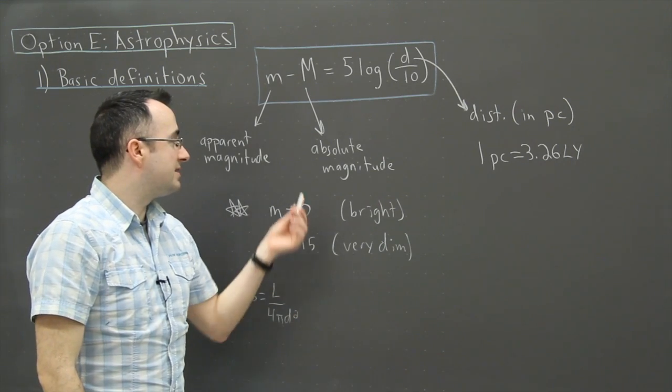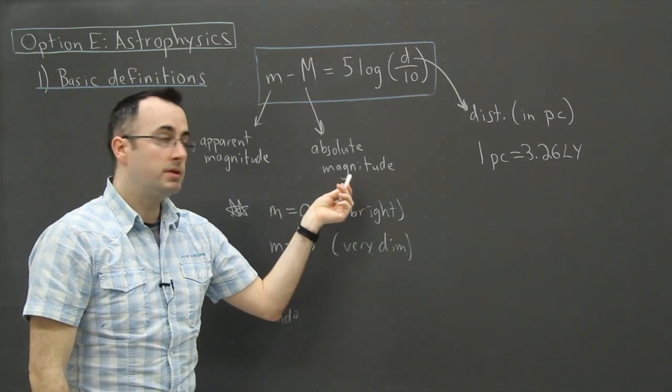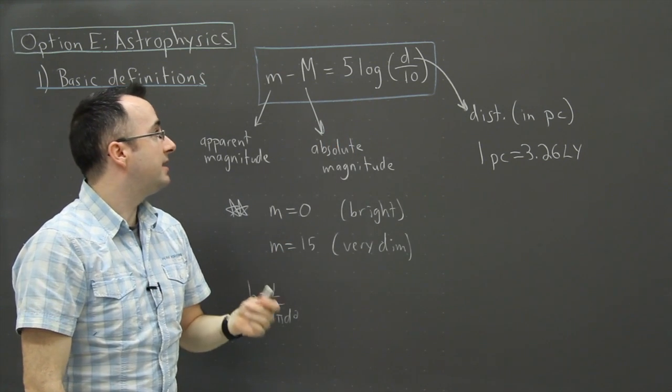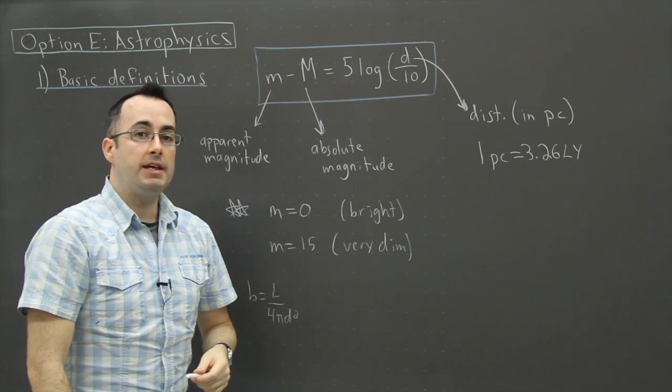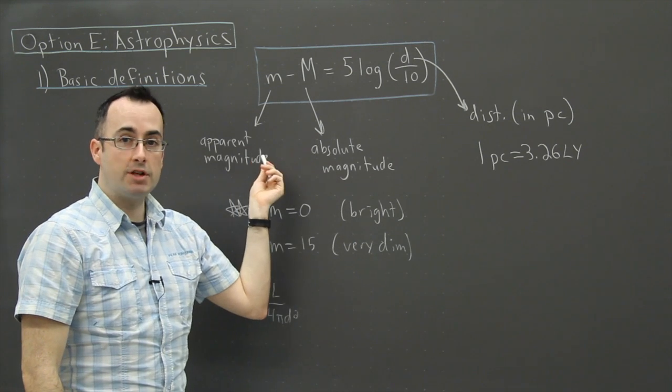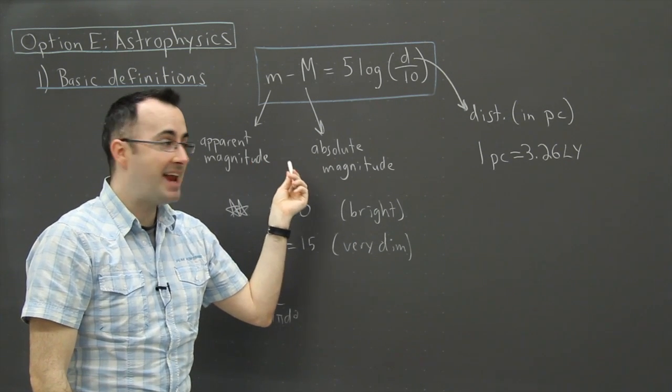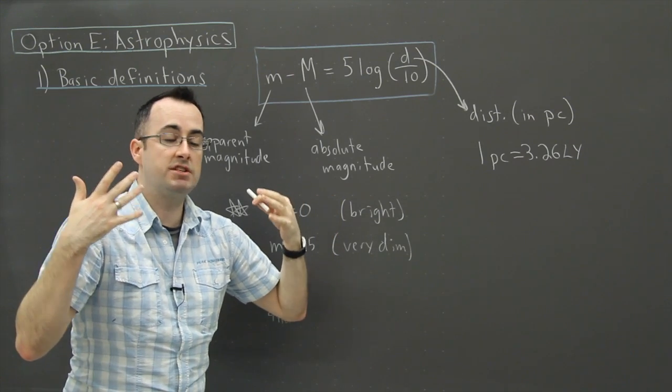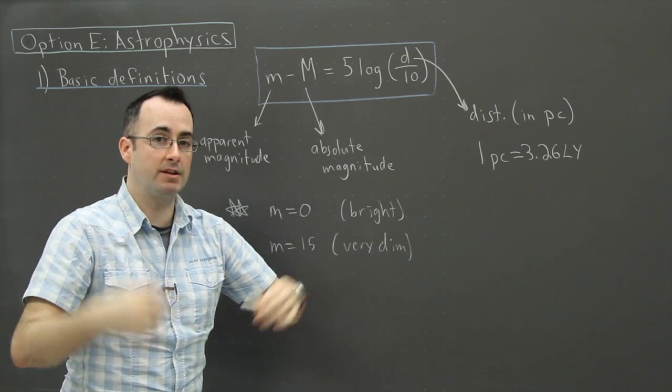Now the reason is that absolute magnitude, the way that we've defined it, is a little bit strange too. We've defined it as the apparent magnitude of a star that's exactly 10 parsecs away. That's how they've just defined absolute magnitude.